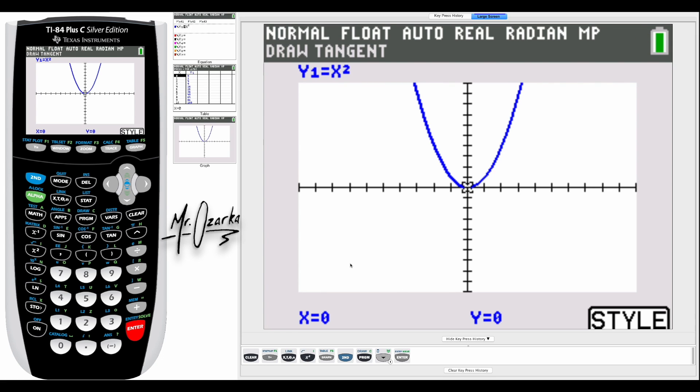Okay, then it brings you to the graph. What you want to do from here is type in whatever x value you want to find the equation of a tangent line for. Let's say we want to find the equation of a tangent line of x squared at x equals two.